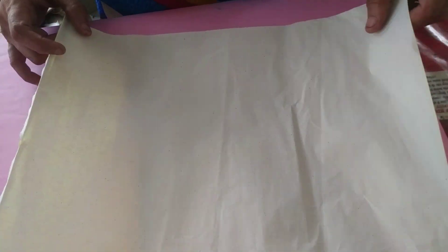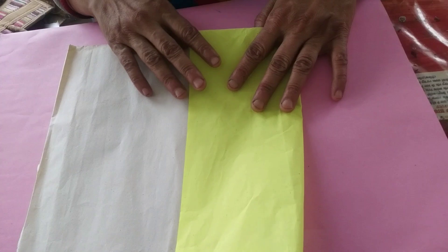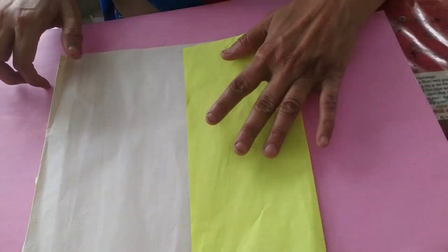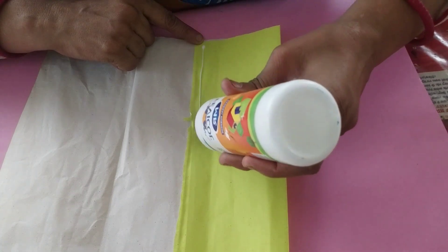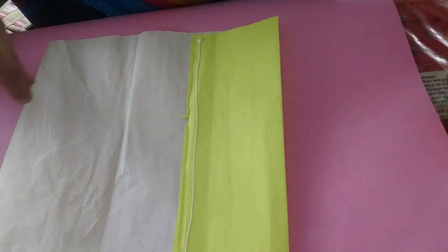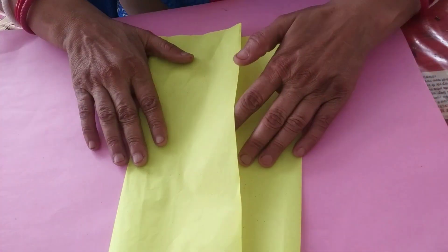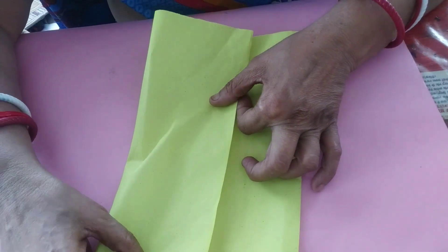Take this paper and fold it like this, and again fold like this. Now paste by glue. Use glue for pasting.